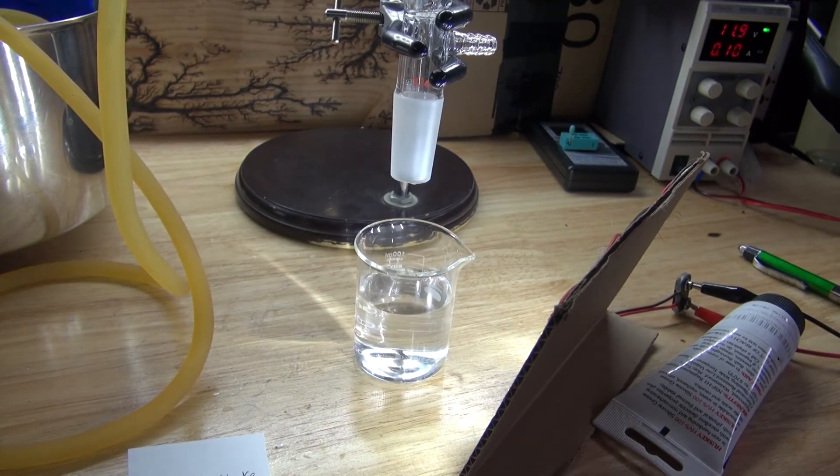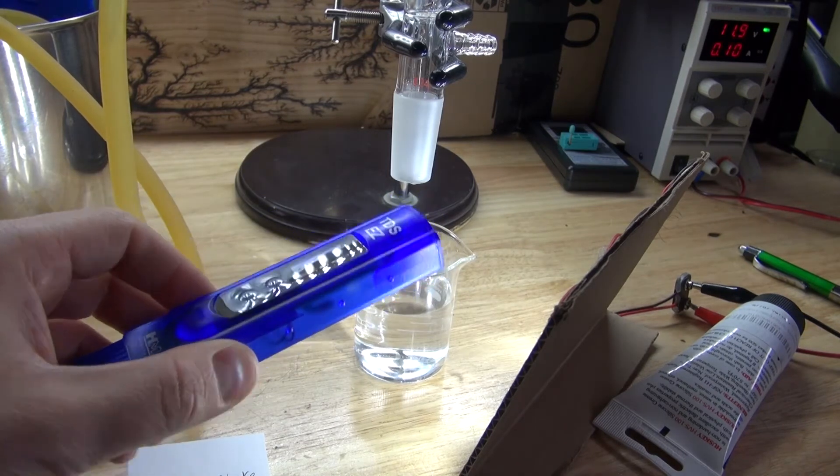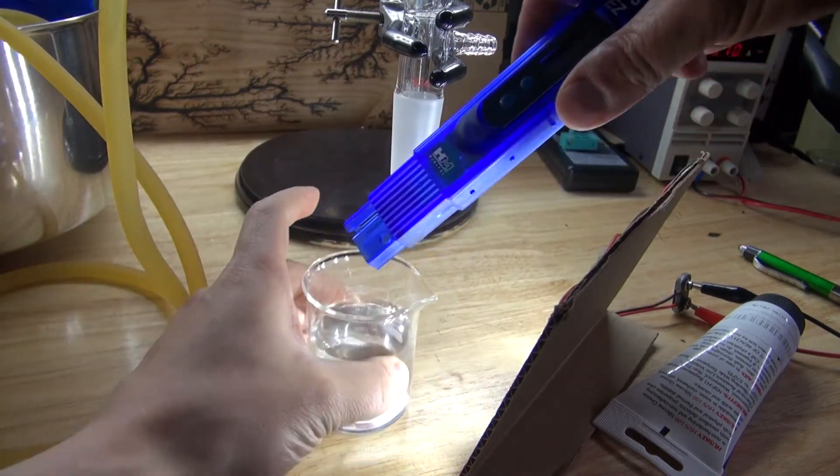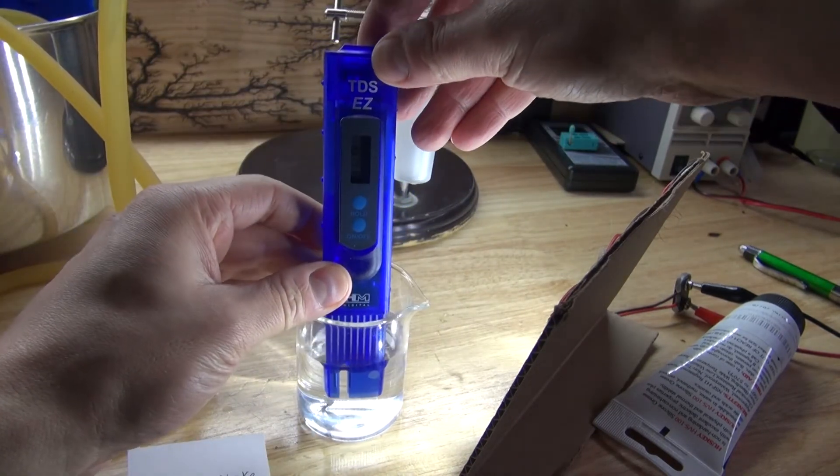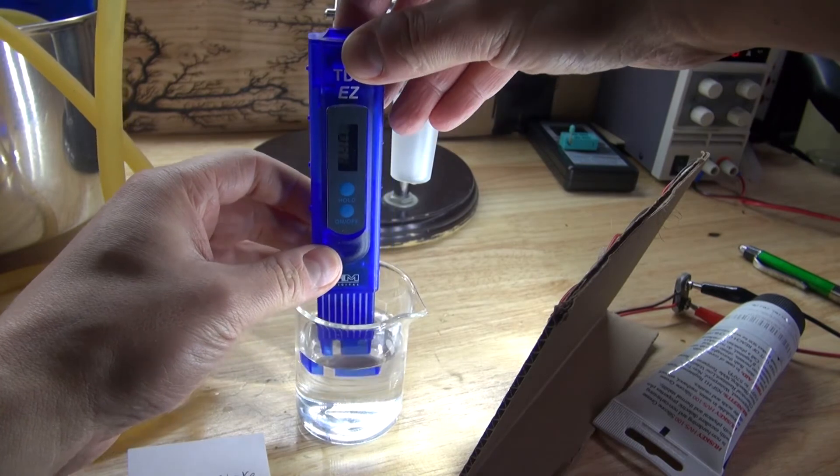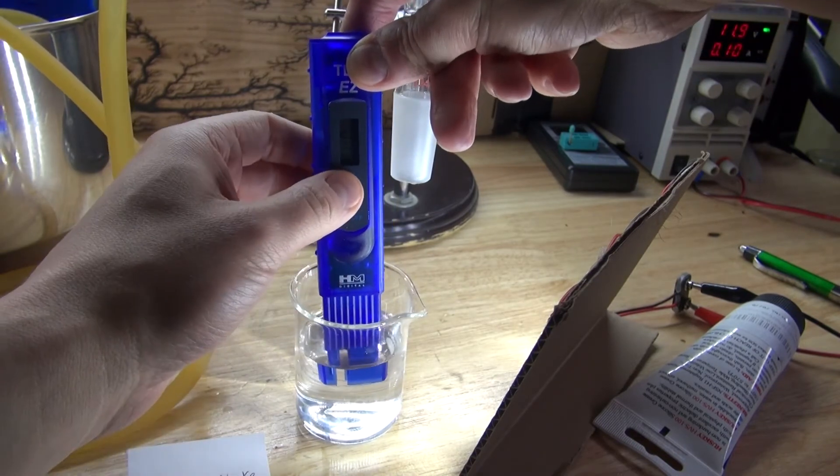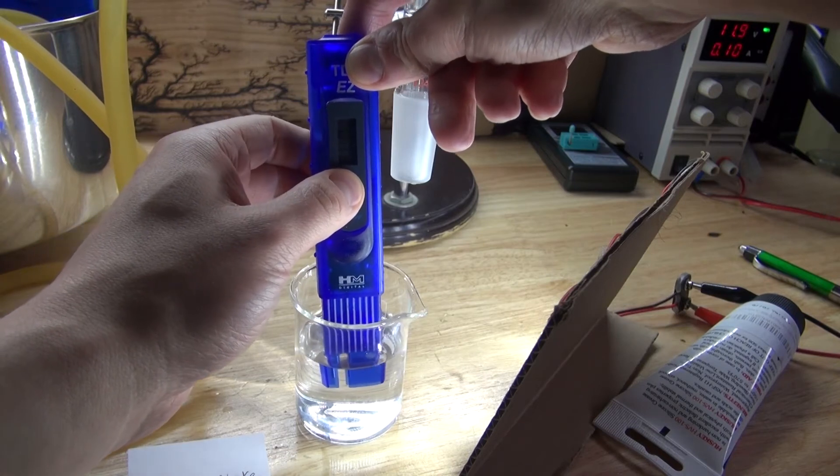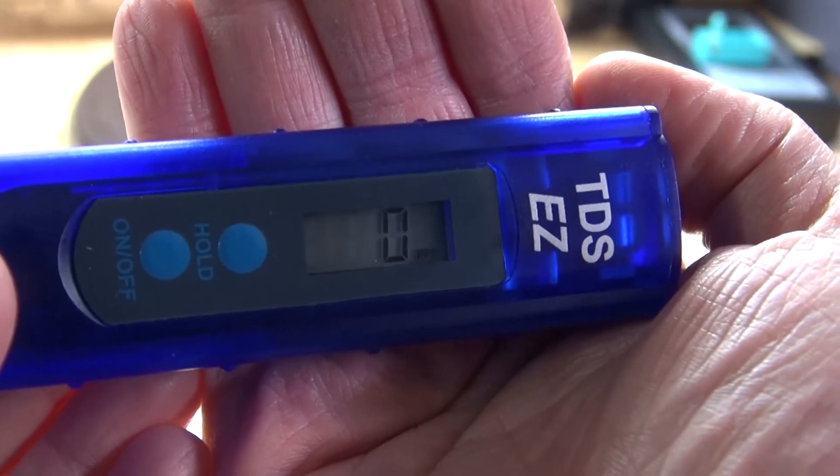And there we go. It is now recondensed. Now let's take my TDS meter and see what the new results are on my second run. Wiggle it around a little bit to be sure that the contacts are contacting. And as you can see, it is 0 parts per million. I officially made pure distilled water, exactly like what you would buy at the store, except this one is homemade.